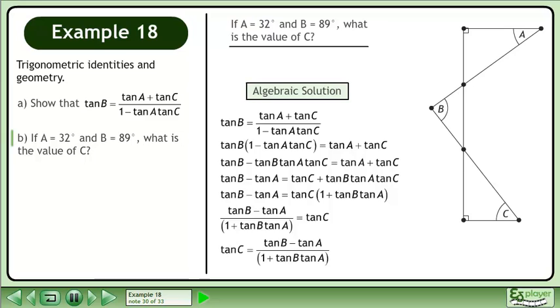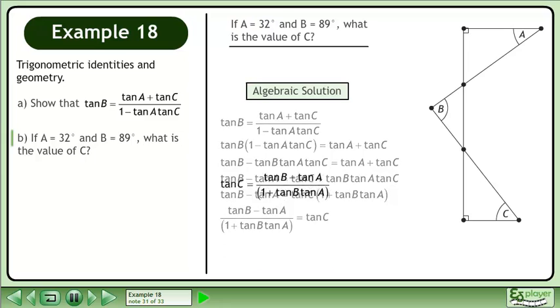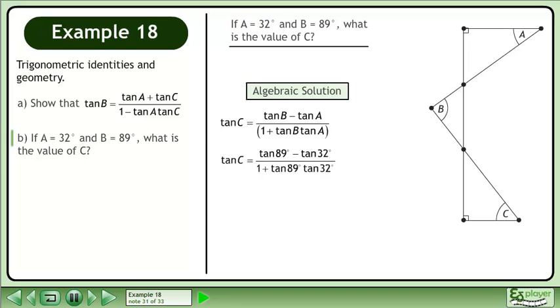We now have an equation that can be used to find angle C. Plug in angles A and B. This evaluates to 1.5399 continuing. Take the inverse tangent of both sides to get the answer 57 degrees.